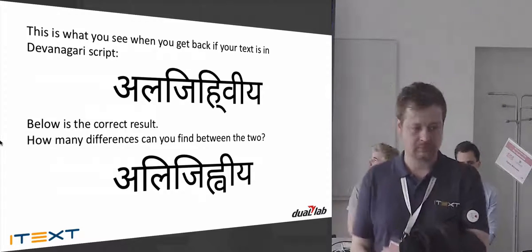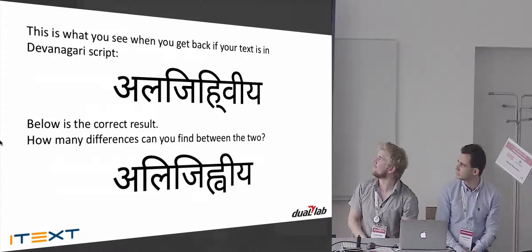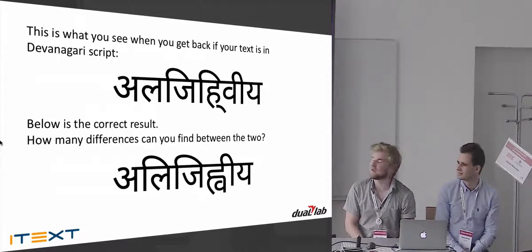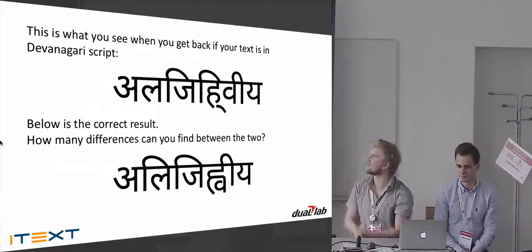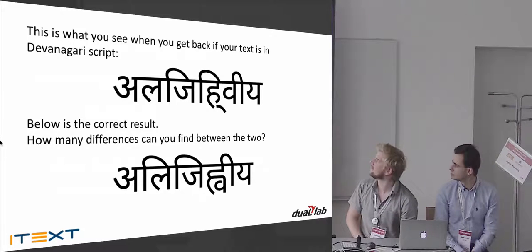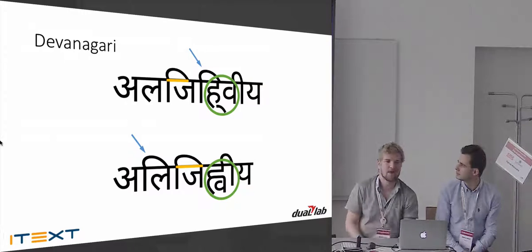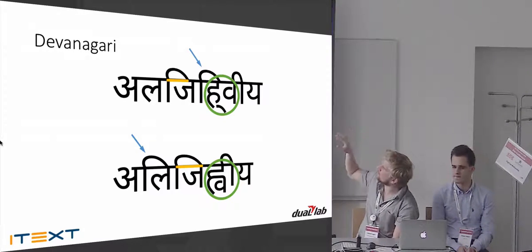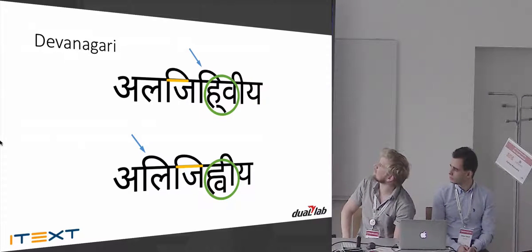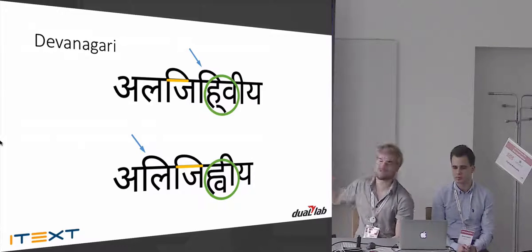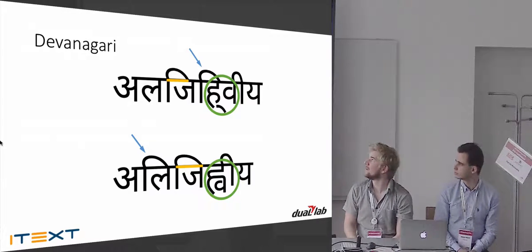For the Indic script Devanagari, that is not exactly how it goes. This is the output if you do it naively. Most people don't know Hindi, and it might look okay — it has ligatures — but it's completely incorrect. For anyone who knows Hindi, there are a lot of differences highlighted here: the blue arrow shows diacritics on top shifted to the left, one diacritic bow is much wider, two characters are mashed together, and the diacritic on the bottom has disappeared. This is how it should be written in Devanagari.